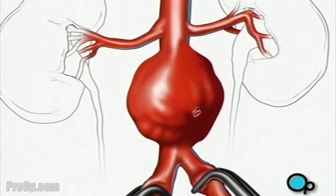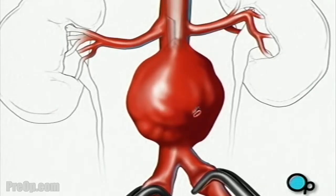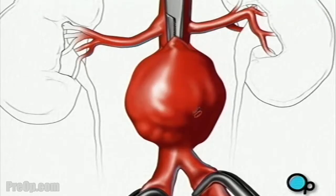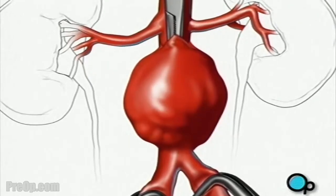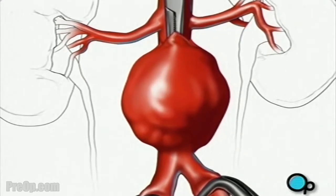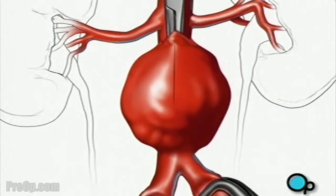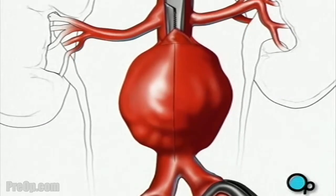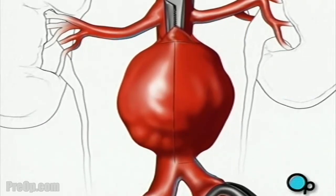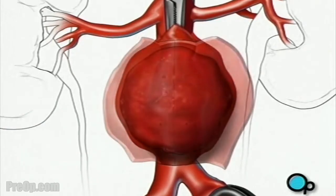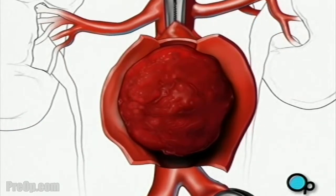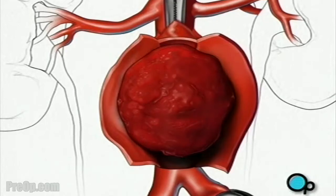Next, your doctor will clamp the artery above the aneurysm. Once the blood supply has been shut off in this manner, your doctor will make a vertical incision in the artery wall and two small horizontal incisions to allow access to the damaged area. The blood clot can then be removed.